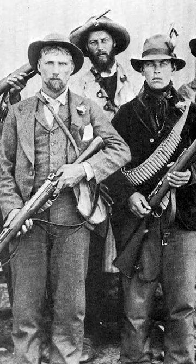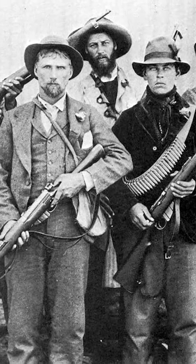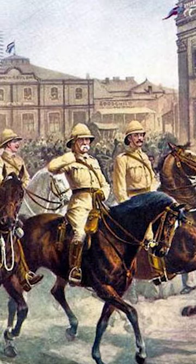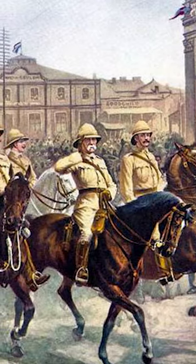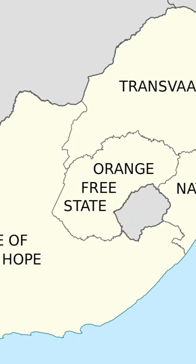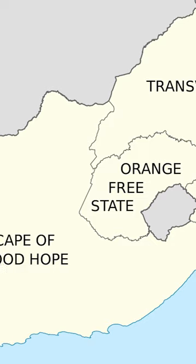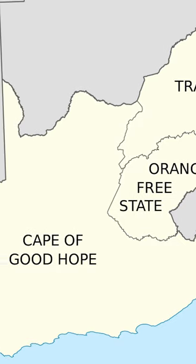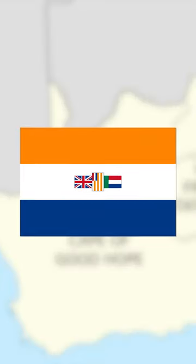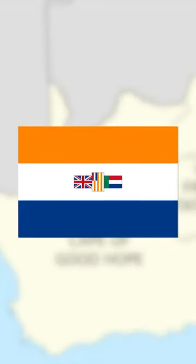The Second Anglo-Boer War resulted in British victory and the eventual establishment of the Union of South Africa in 1910, comprising British colonies and the former Boer republics, marking the end of Boers' self-rule in the region.